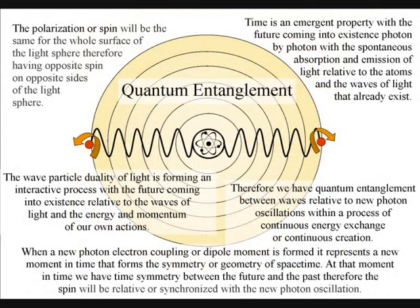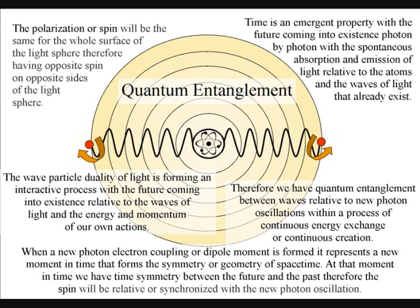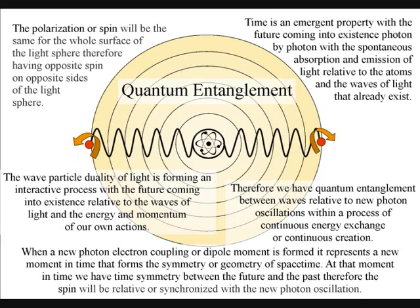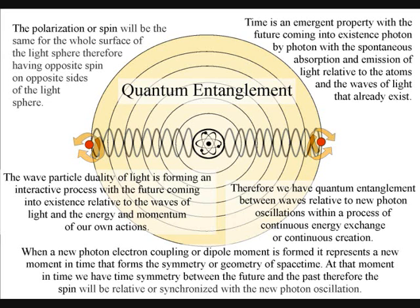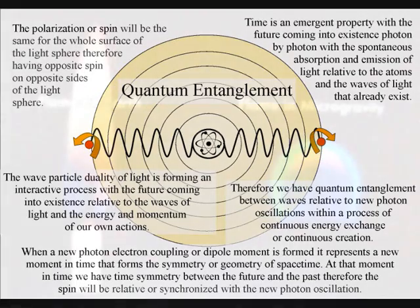Quantum entanglement can be explained by the wave nature of light, with each photon representing a new moment in time. At that moment in time, the polarisation or spin of the light waves will be relative or synchronised with the new photon oscillation.